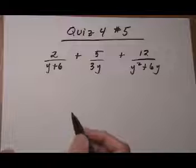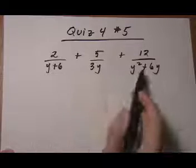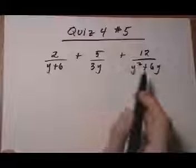Quiz 4, number 5. Here we have three algebraic fractions, or rational expressions, being added together.